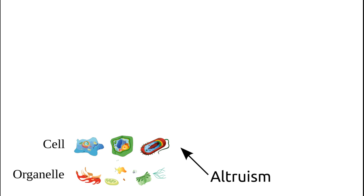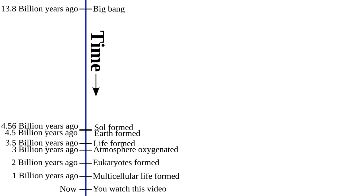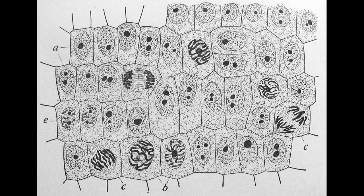That which is altruism at the level of an organelle is self-interestedness at the level of the eukaryotic cell. Because of this primitive altruism, eukaryotes were generally more effective than simpler forms of life. They were also more effective at finding what was effective, and this increased their effectiveness at progressing ahead of other life. Approximately 1 billion years ago, eukaryotes found that it was also better to be altruistic at the cellular level, and they began to band together in packs.